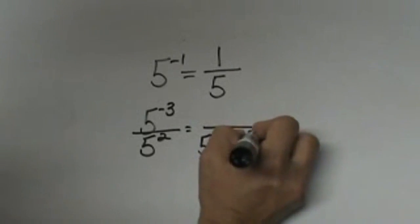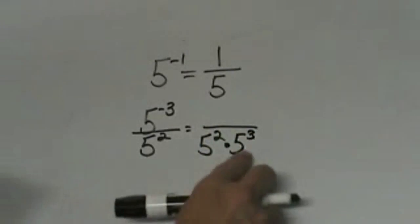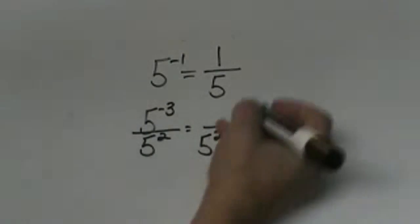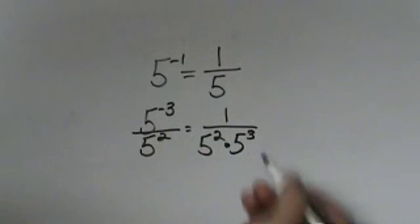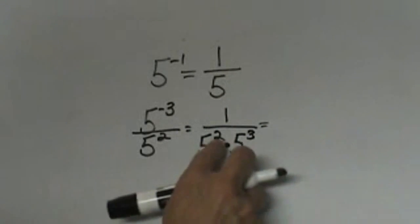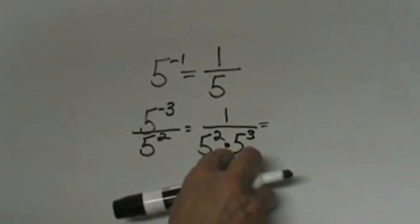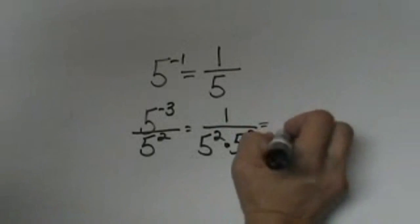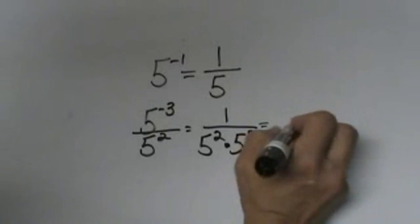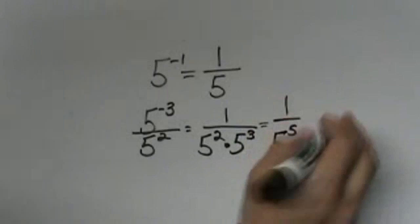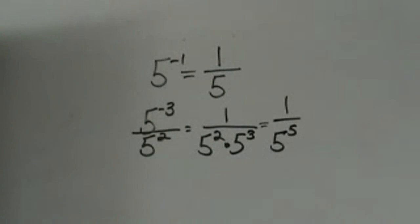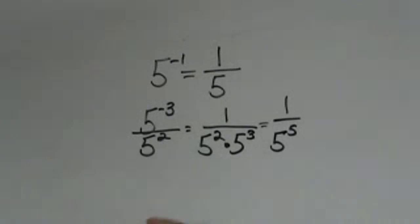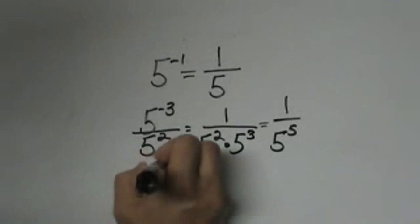So I'm going to move that five cubed to the bottom — now it's a positive exponent. And again we just have a one on top because there has to be something on top. When you multiply like bases you add exponents, so that's five to the fifth on the bottom with a one on top. So that's how you would simplify that one. Now let's look at one that has both sets of negatives.